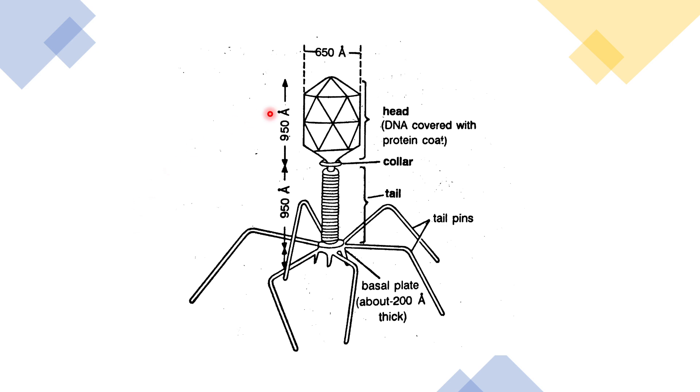Here we see in detail the tadpole-like structure of a bacteriophage, first discovered by Twort and Herelle. This is the head and tail of the bacteriophage. The tail is 950 angstroms in length and the head is 650 angstroms in diameter. It is covered with DNA and has a protein coat known as capsid. This is the collar and the tail of the bacteriophage. This is the basal plate which helps in attachment, and it is 200 angstroms in thickness. These are the tail pins.